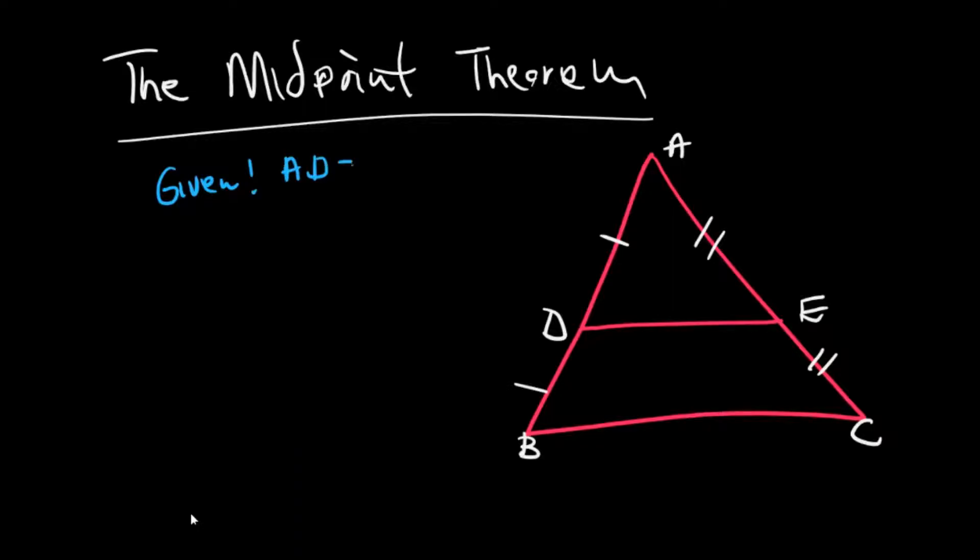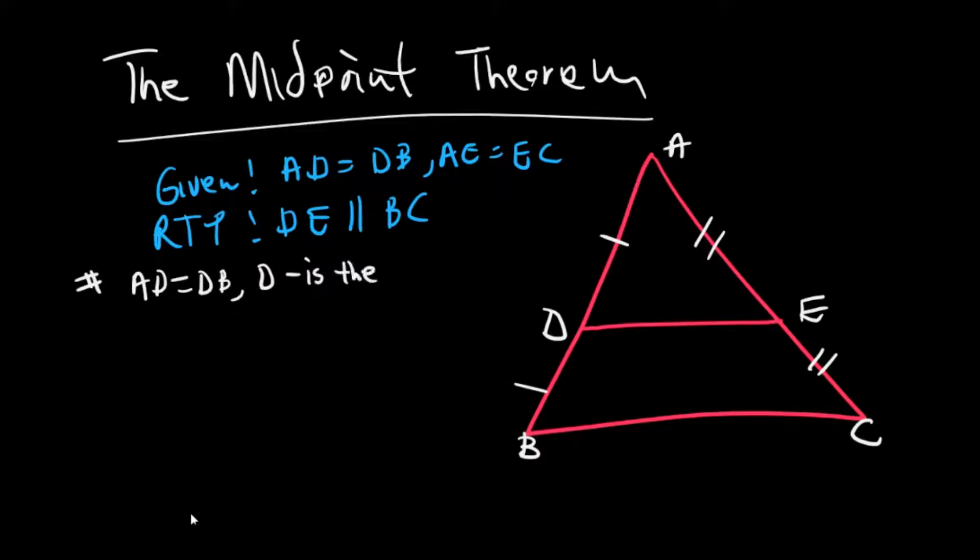Given that AD equals DB and AE equals EC, you're required to prove that DE is parallel to BC. So the first thing you're going to do is say: since AD is equal to DB, therefore D is the midpoint.